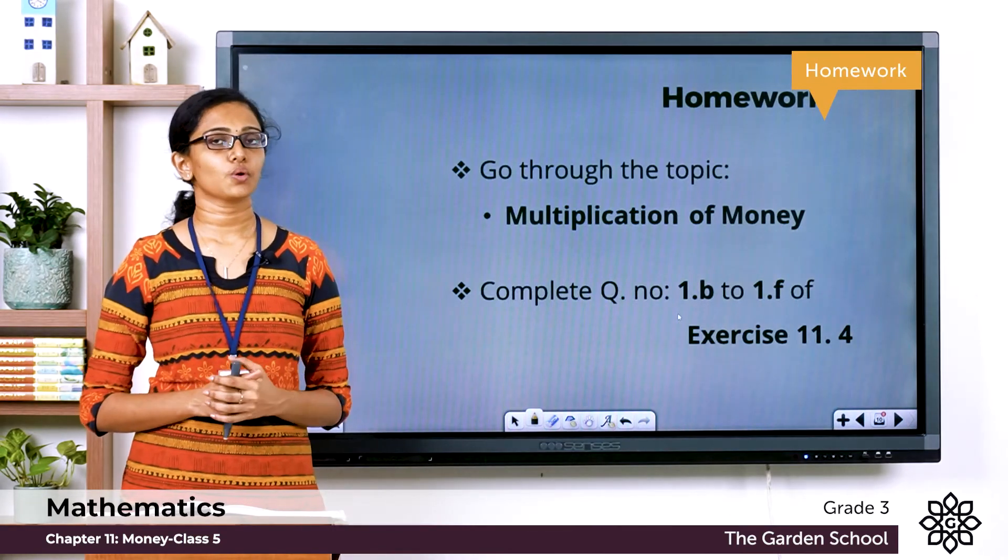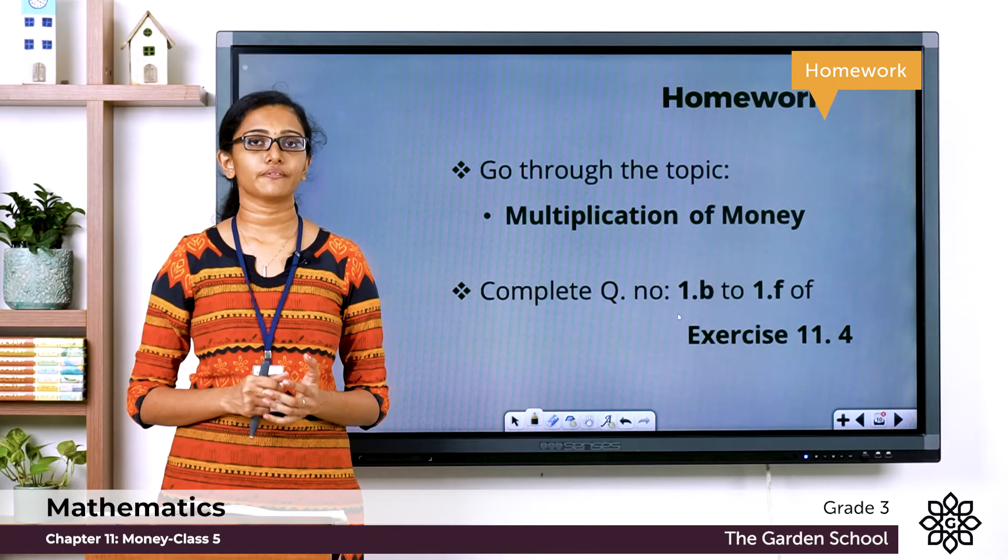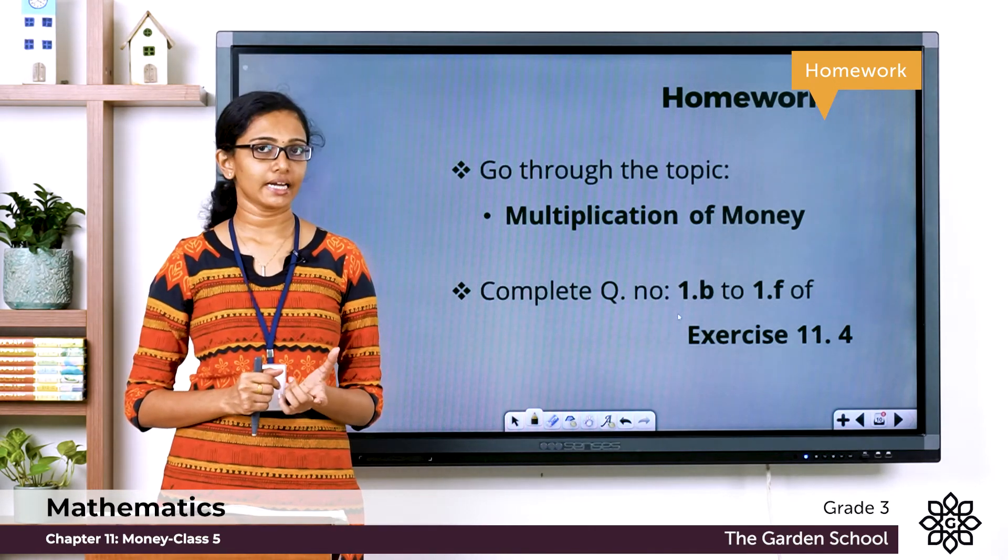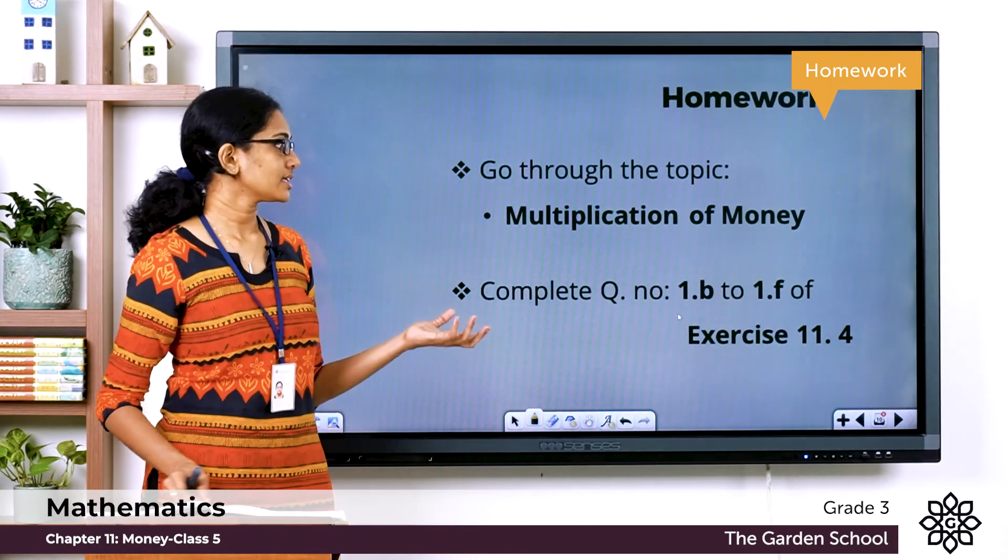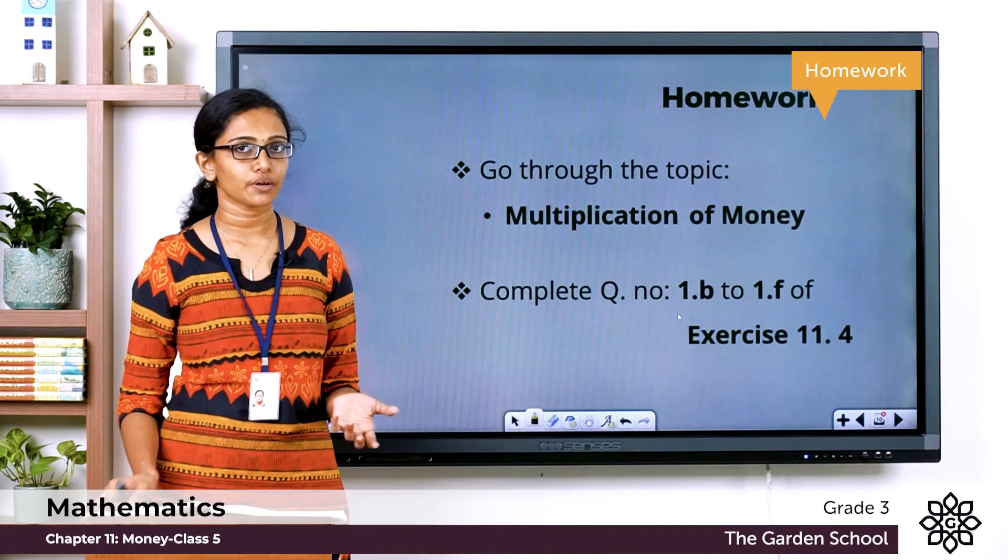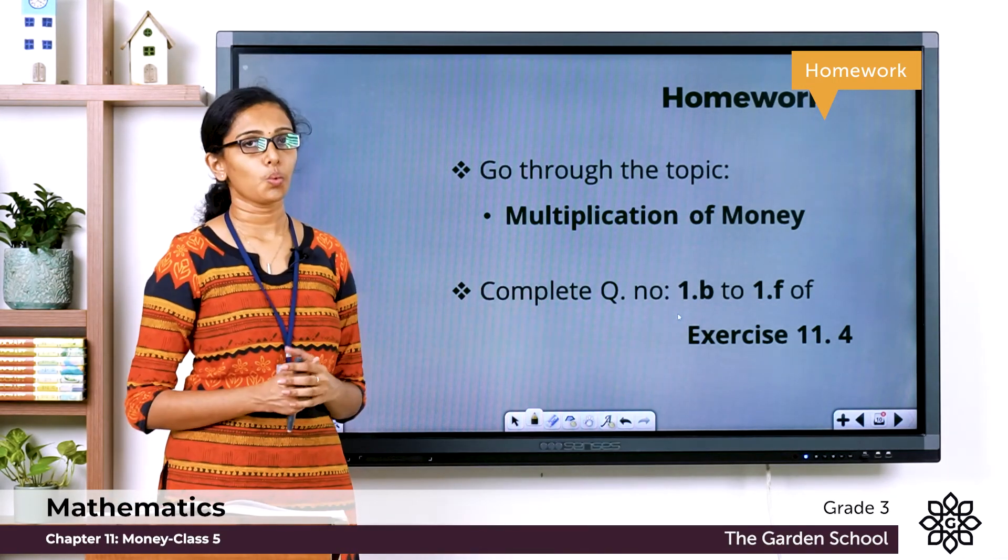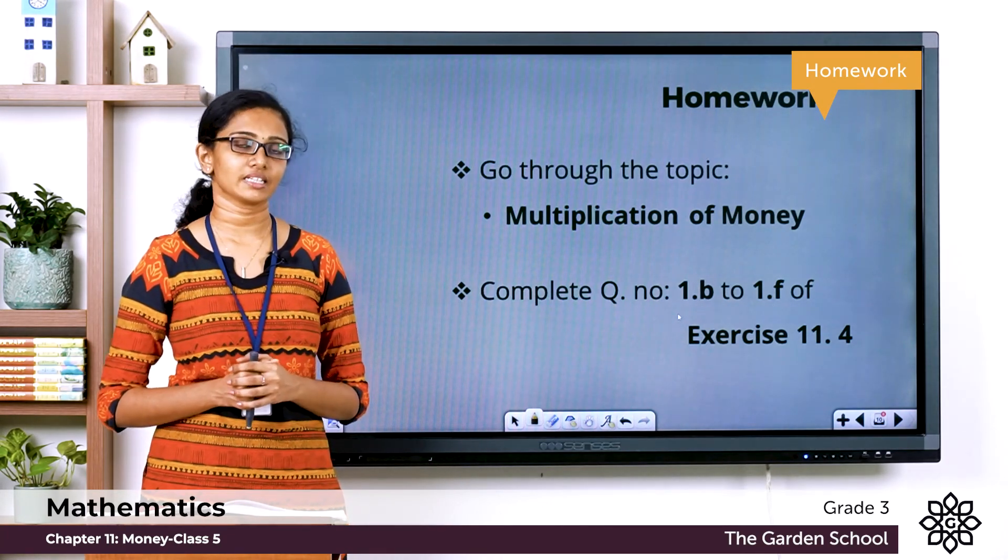Now children you have to go through this topic multiplication of money in page number 155 of your textbook. Then at the end of the page you can see a heading enrich yourself which is a note. Make sure you go through that note as well. Then you have to move on to exercise 11.4 and you have to complete the questions 1B to 1F from the first question. 1A we have already done in class.